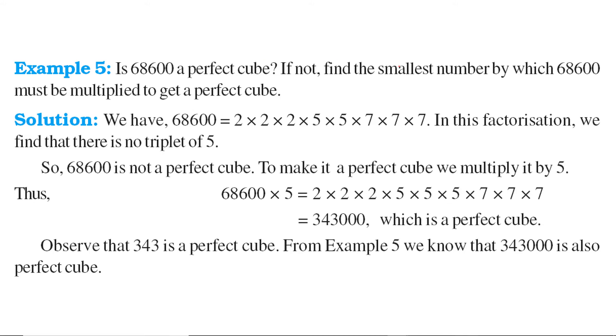Is this number a perfect cube? Let us find out the factors. So you get 2 into 2 into 2, you get 5 into 5, you get 7 into 7 into 7. This is 7 cubed, this is 2 cubed, but this is 5 squared. So you need 5 more.